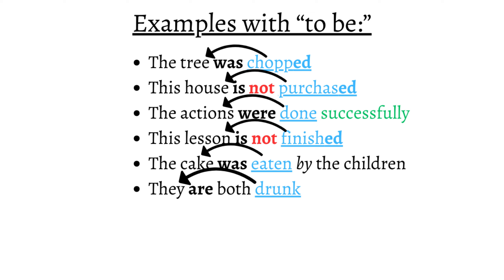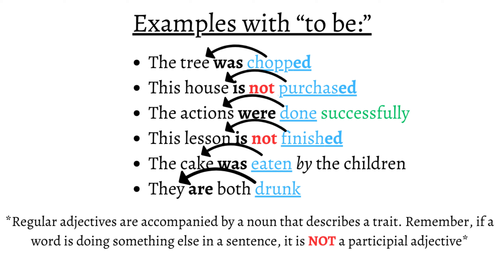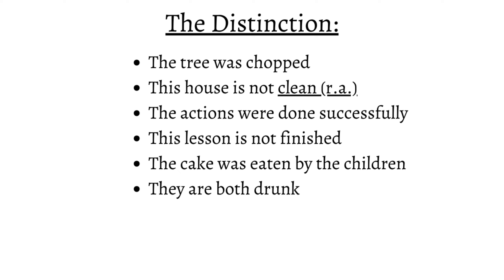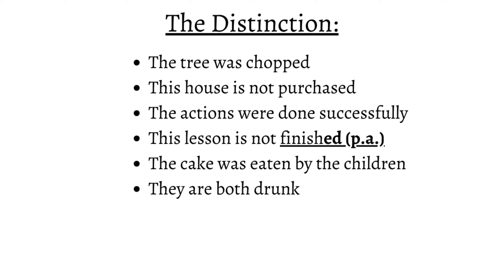This is why it's important to know the past participle forms of a lot of verbs. Because they are similar to regular adjectives, it's easy to confuse them with other parts of speech. But remember, regular adjectives are accompanied by a noun that describes a trait, so if a word is doing something else in a sentence, it is not a participial adjective. Here's a simple difference: "The tree is tall" has a regular adjective because it's a trait not derived from a verb. "The tree was chopped" has a verb with "-ed", so it's a participial adjective. Similarly, "This house is not clean" has a regular adjective, but "This house is not purchased" has a participial adjective. "This lesson is good" has a regular adjective, but "This lesson is not finished" has a participial adjective. The difference can be told using the form of the adjective — if it's a participle that was modified, it's a participial adjective; otherwise, it's a simple regular adjective.